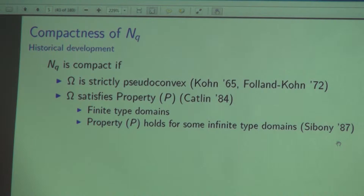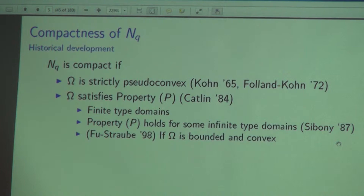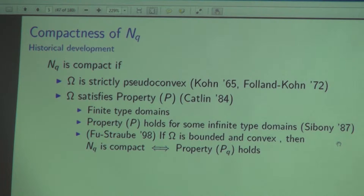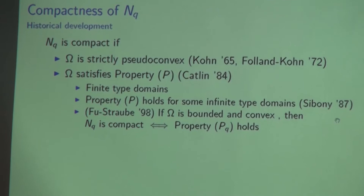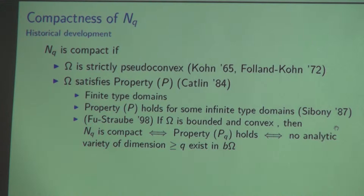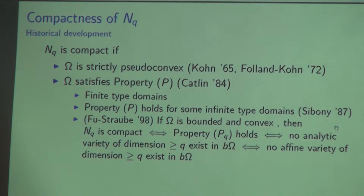Later, Şahutoğlu and my advisor Emil Straube proved that if omega is bounded and convex, then the D-bar Neumann operator is compact if and only if property P_Q holds. This is the first example of equivalence between property P_Q and compactness of the D-bar Neumann operator, and it holds if and only if no analytic varieties of dimension greater or equal to Q exist in the boundary. On convex domains this is also equivalent to the non-existence of affine varieties of dimension greater or equal to Q in the boundary. For the first three equivalences, one can claim that omega is locally convexifiable — also proved in the Şahutoğlu–Straube paper.